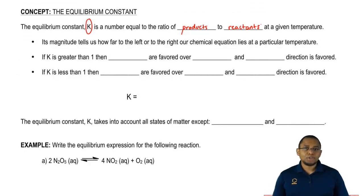Why do I say at a given temperature? Because temperature directly affects our equilibrium constant K. Increasing the temperature will increase our K value. Decreasing our temperature will decrease our K value.